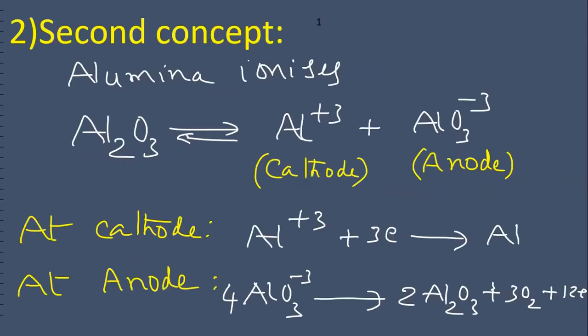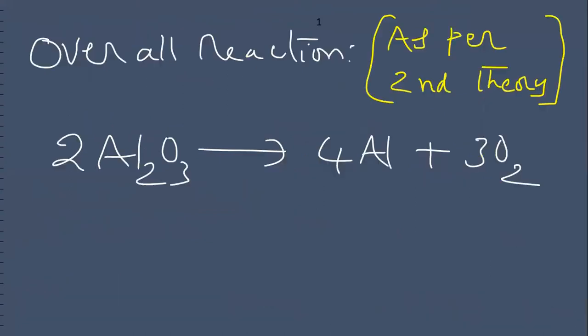This is the second concept. Alumina ionizes. It changes into aluminum ions and aluminate ions. At cathode, aluminium ions take up the electrons forming aluminum metal. Overall reaction is this one.